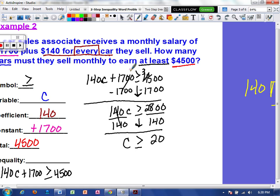Alright. So now I want to check that answer so I can choose any value that I want that is greater than or equal to 20. So I am going to choose 100 because I think that would be really easy to work with. So 140 times 100 plus 1700 should give me a value greater than or equal to 4,500. Well, if we multiply 140 times 100, we're going to get 14,000. So 14,000 plus 1700 should be greater than or equal to 4,500. Well, we know 14,000 plus another 1,700 is obviously going to be much bigger than 4,500.